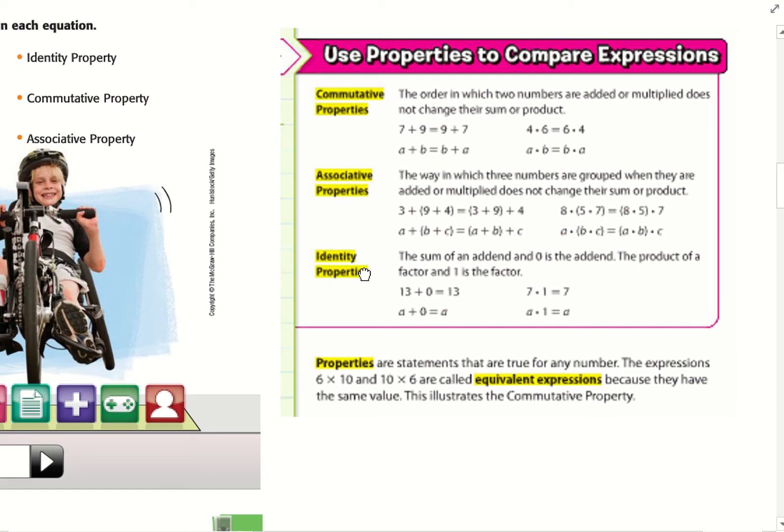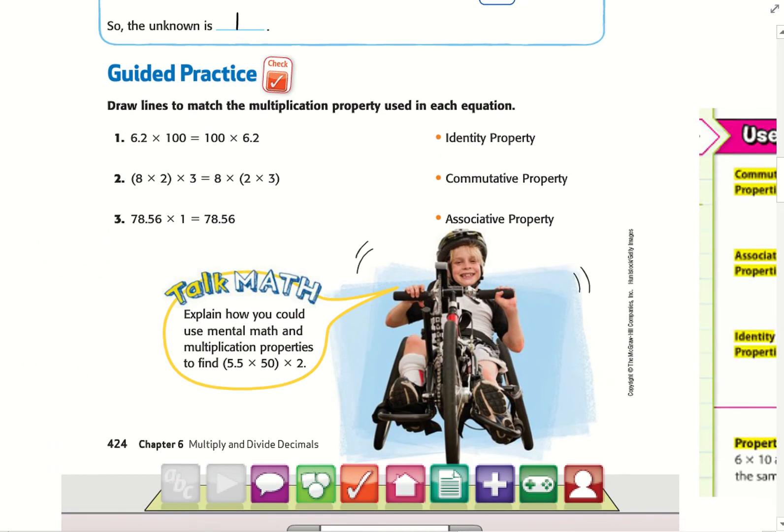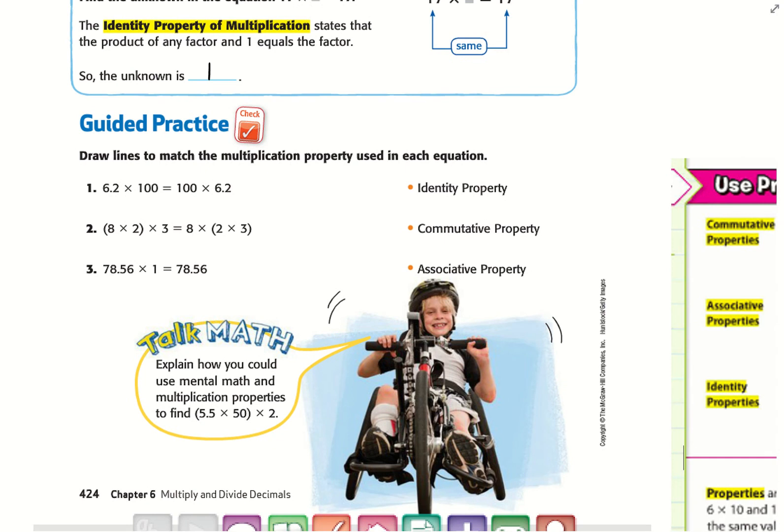Go ahead and try the guided practice: draw the lines and match which property is which. Now that you drew the lines, I'm going to draw mine. I know right off the bat, if I multiply by 1, that's the Identity Property. Number 2 has groups, so that's the Associative Property. And number 1, the order just changed, so that's the Commutative Property.